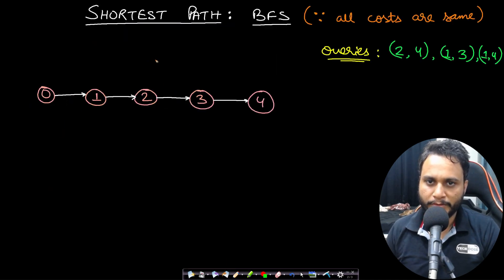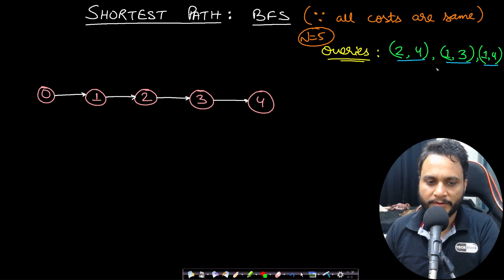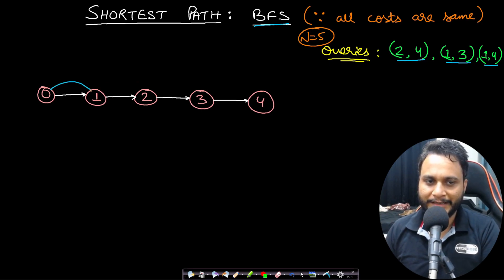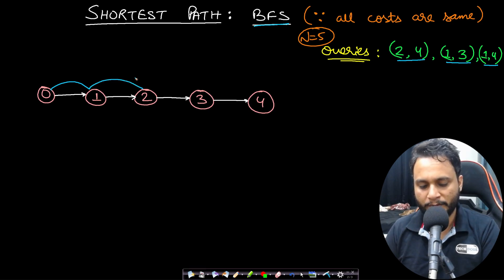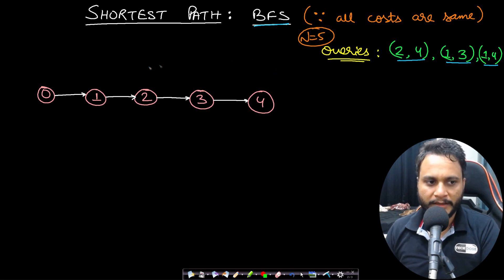Let's understand how to solve this. With n equals 5 and queries like [2,4], [1,3], [1,4], we need the shortest path. There are two algorithms: simple BFS and Dijkstra. Since all hops have equal cost — a hop from 0 to 1 costs the same as 1 to 2 — we don't need Dijkstra. We can use simple BFS without a priority queue.